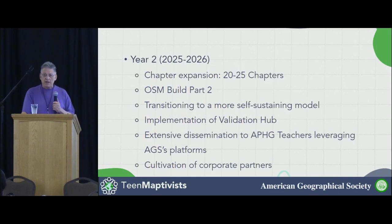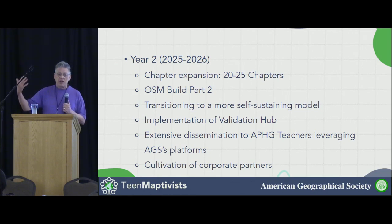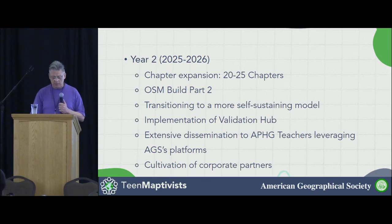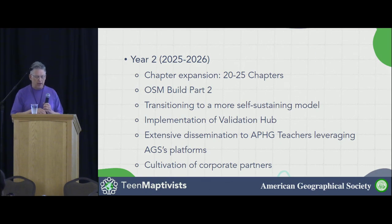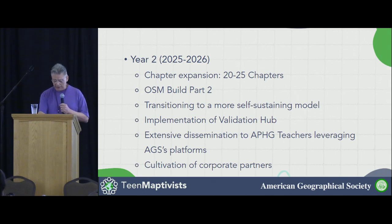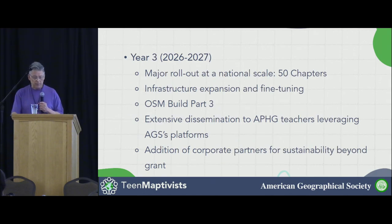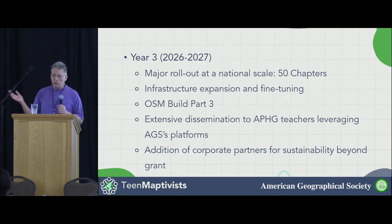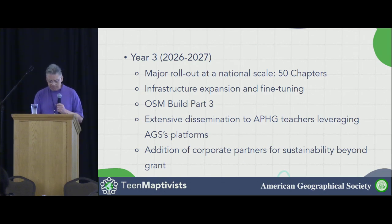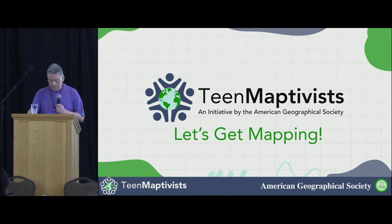For next year, 2025-26, we want to expand to 20 or 25 chapters, transitioning to a more self-sustaining model — more like Youth Mappers — where there's a package: add water and stir, and you've got a Team Aptivist chapter. More implementation of the Validation Hub will create connective fiber between Youth Mappers and Team Aptivist. Year three is a major rollout — we're hoping to roll this out to about 50 chapters or so.